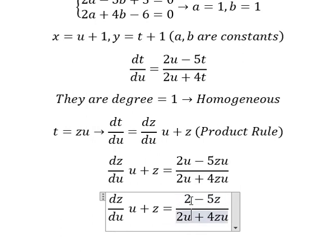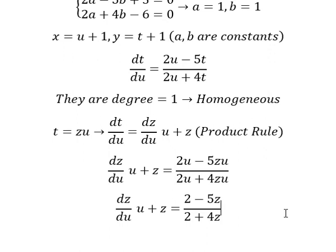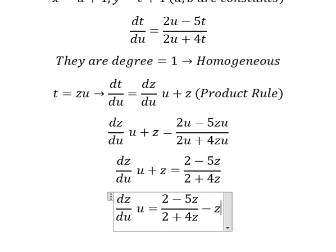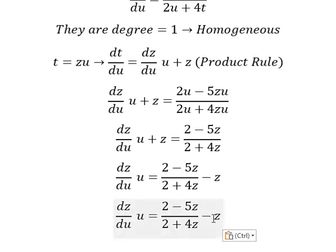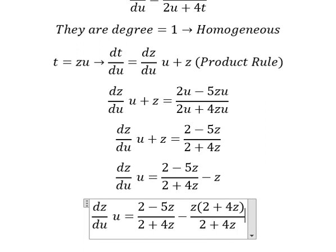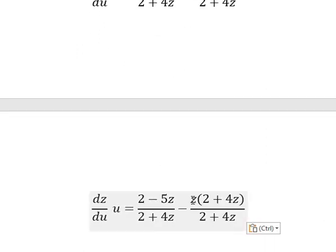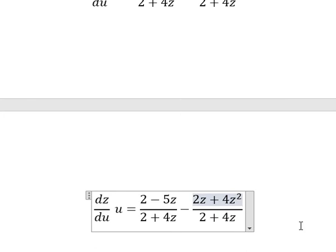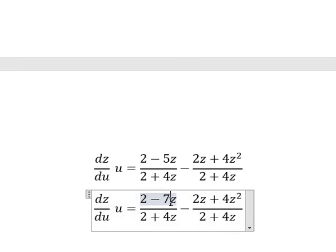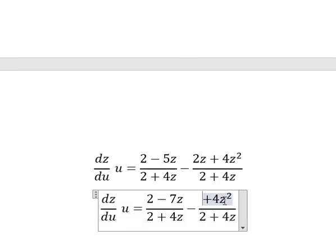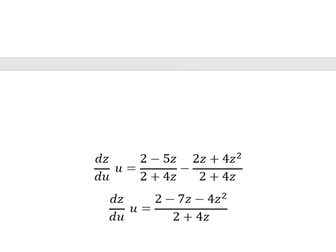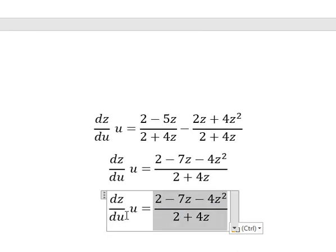We put z on the right. We do a common denominator. So we have 2z plus 4z squared. Then negative 5z minus 2z gives negative 7z. Then negative 4z is placed here. Next, I will move this to here, and du over u goes here.